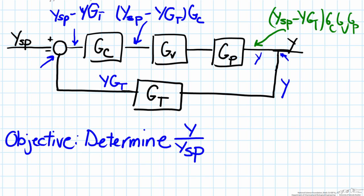The important point now is that based on the summing point we talked about earlier, indicated by the blue arrow, we see the fact that this term ysp minus yGt times Gc, Gv, Gp is also equal to y. So with this equality we can now begin to develop our transfer function that relates ysp, the input variable, to y, our output variable.